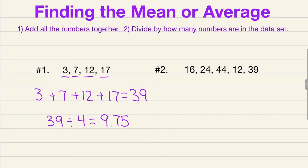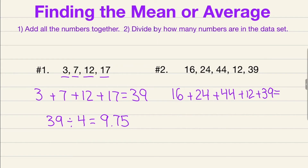For number two, we're going to use the same exact method. We're going to add all of our numbers up: 16 + 24 + 44 + 12 + 39. When you add them all up you get a sum of 135.